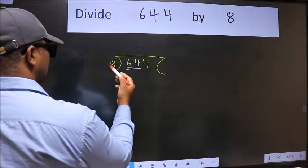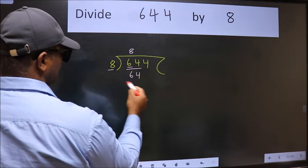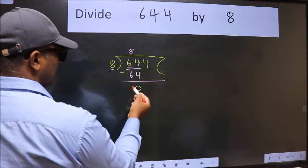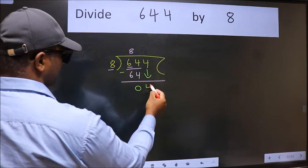When do we get 64 in the 8 table? 8 times 8 is 64. Now we should subtract. We get 0. After this, bring down the beside number, so 4 down.